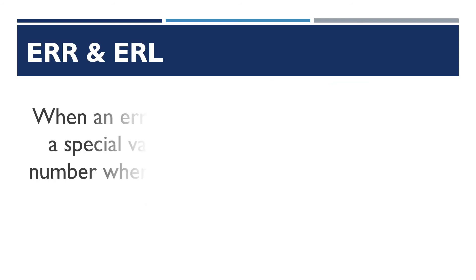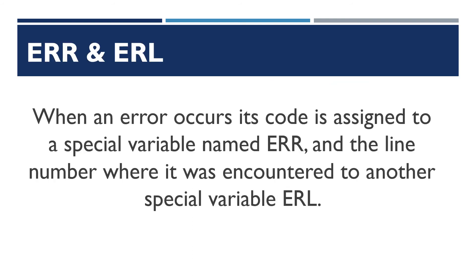In GW BASIC, when an error occurs, its code is assigned to a special variable named ERR, and the line number where it was encountered is assigned to another special variable named ERL.